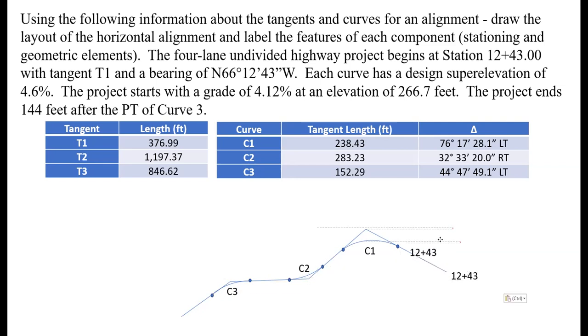Now we can add in some of our tangent lengths that are given in our tangent table. We're told tangent one is 376.99 feet, tangent two is 1197 - here's a good example where this drawing is not to scale, but we got the angles right or close and have the relationship correct. The last one is 846.62 feet. We're also given in the description that the project actually ends 144 feet after the PT of curve three, so we need to make sure we get that final point listed there.